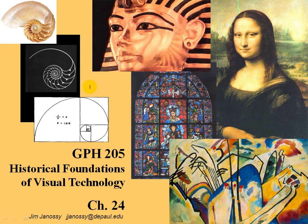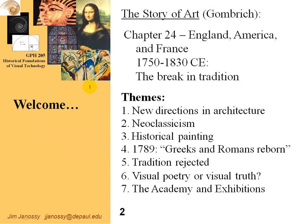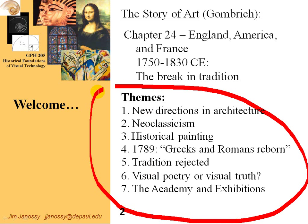Hi, this is Jim Janesey. We're now on to Chapter 24 of The Story of Art by Ernst Gombrich. In this chapter, we're going to take a look at the break in tradition — that is, the break in architecture and art following the Baroque era. I've outlined seven themes altogether of the material in this chapter, and I'm going to take them in exactly this sequence, which is pretty much the sequence that Gombrich describes them.